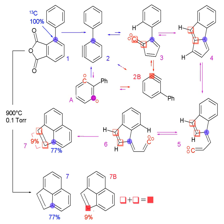A particularly useful type of radioactive decay for these purposes is positron emission. When a positron collides with an electron, it releases two high-energy photons traveling in diametrically opposite directions. If the positron is produced within a solid object, it is likely to do this before traveling more than a millimeter. If both of these photons can be detected, the location of the decay event can be determined very precisely.